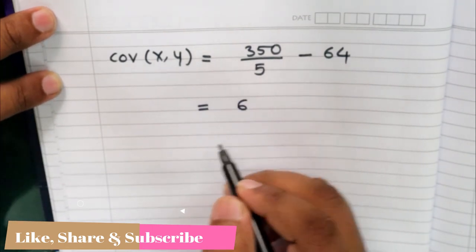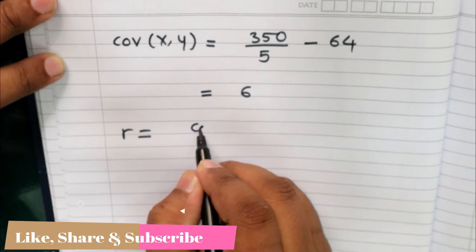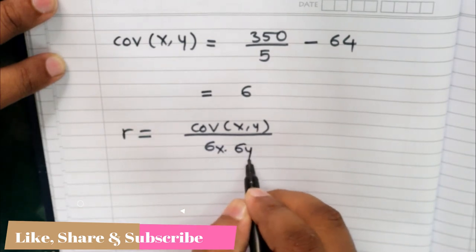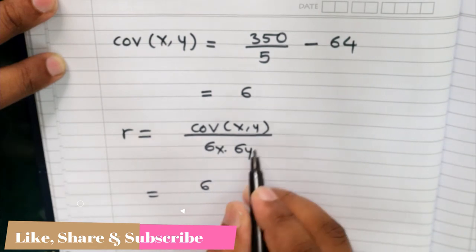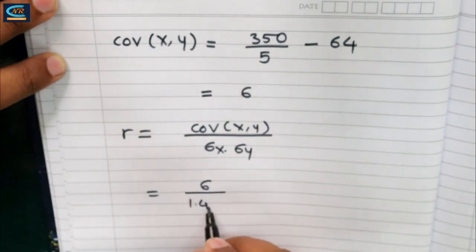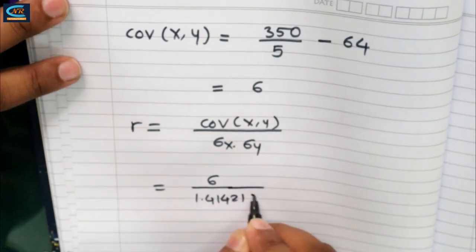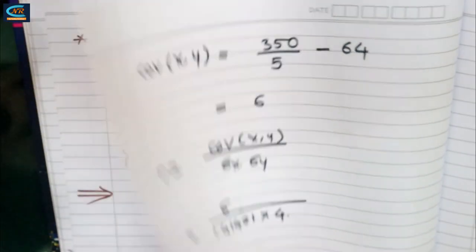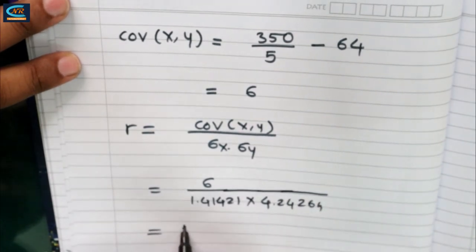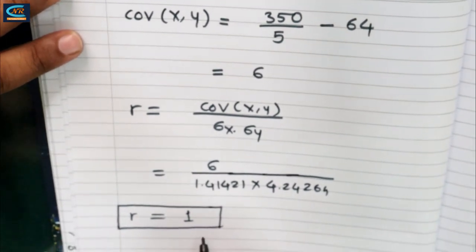Now the correlation coefficient R equals covariance in xy divided by standard deviation in x times standard deviation in y. Covariance is 6, standard deviation in x is 1.41421, and standard deviation in y is 4.24264. After computing this, we get the correlation coefficient R equal to 1.